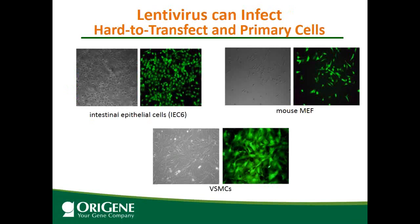Next I want to show some lentiviral transfection data. This slide shows the lentivirus can infect hard-to-transfect primary cells. Lentiviral GFP virus were used to infect intestinal epithelial cells, mouse mast cells, and primary vascular smooth muscle cells. The gray pictures are phase contrast showing cells on the plate, and the green fluorescence pictures show the transduced cells. You can tell clearly that almost 100% of cells were infected, showing that lentivirus is a great gene delivery tool.